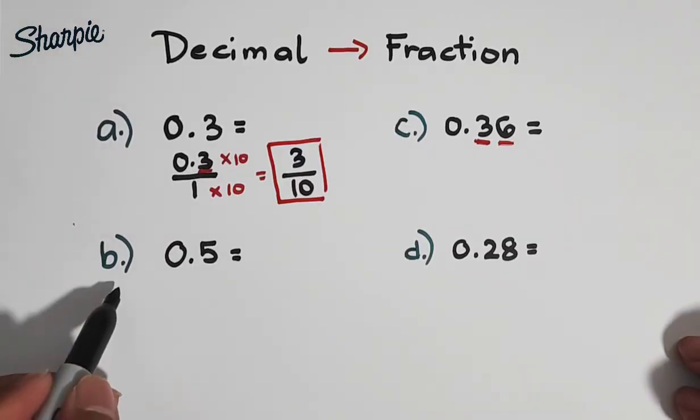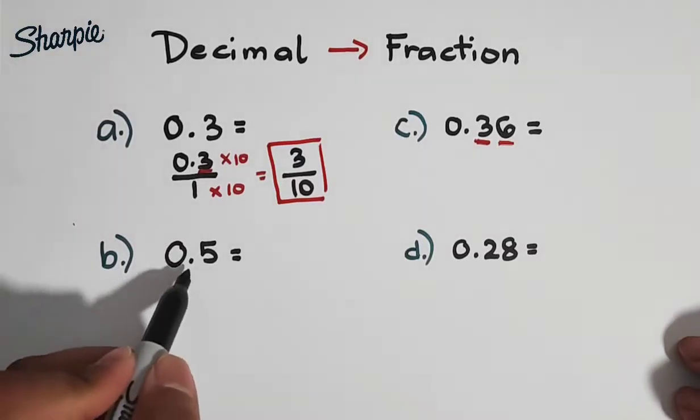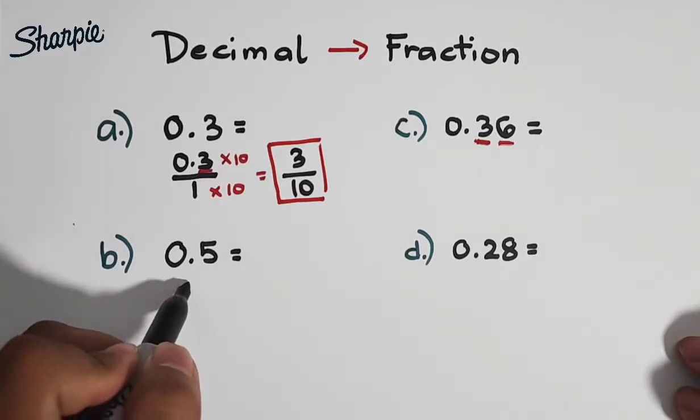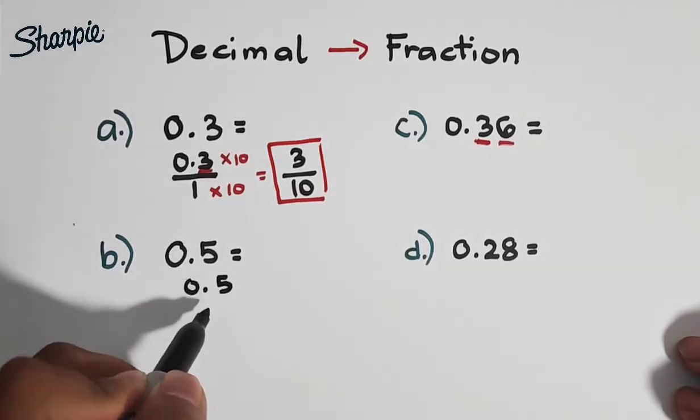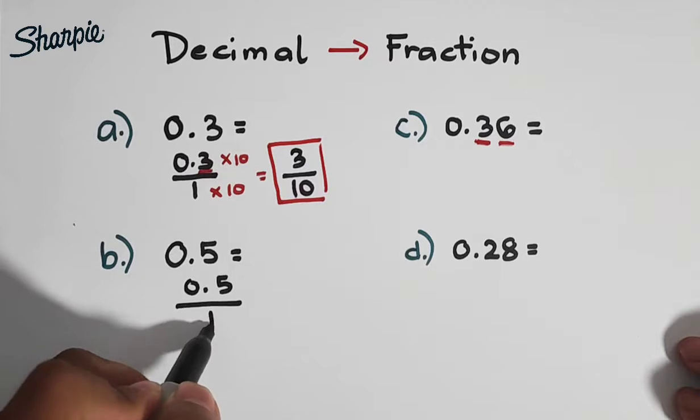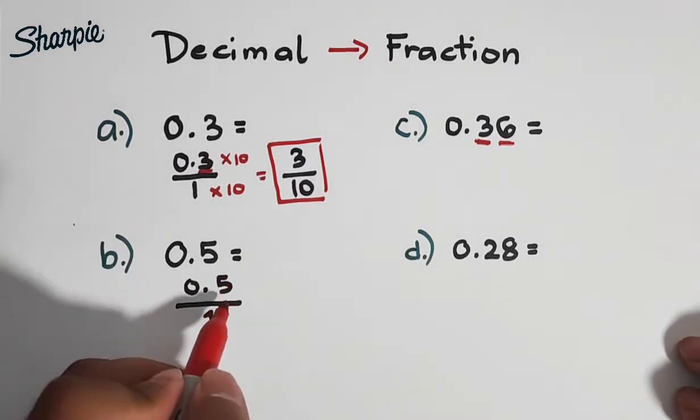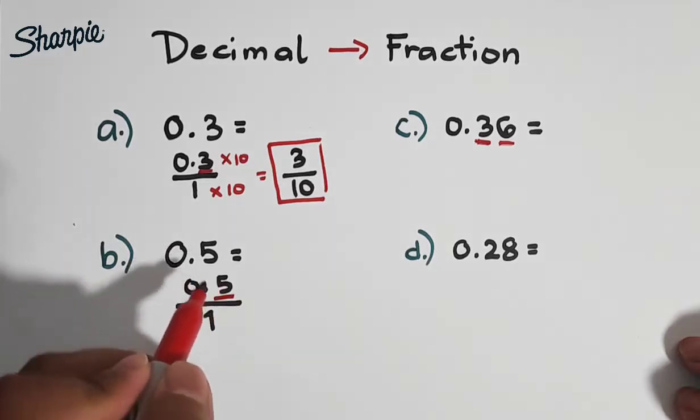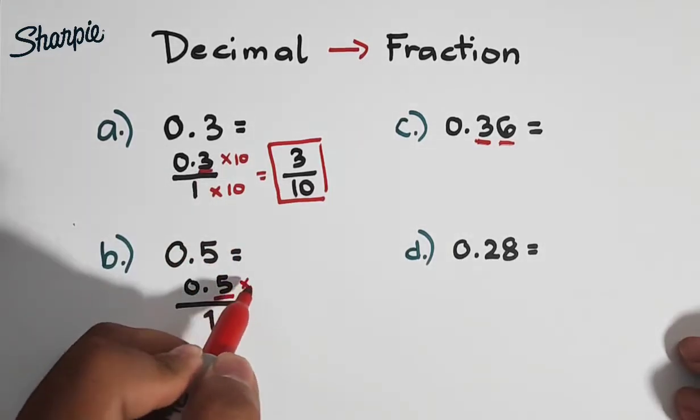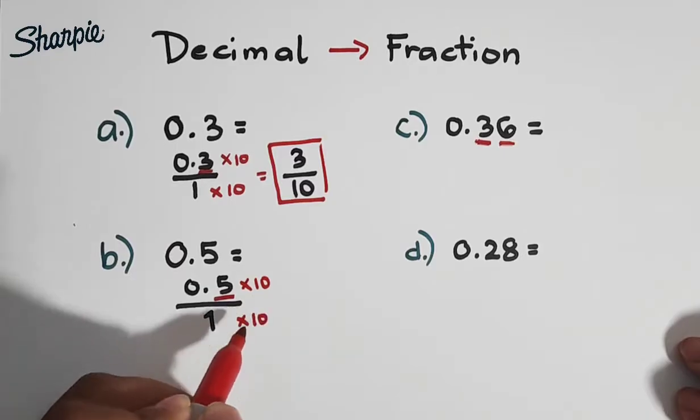Now let's move on with letter B. For letter B, we are given 0.5. So copy natin 0.5 over 1. And as you can see, meron lang tayong 1 decimal value, ito siya. Ibig sabihin niyan, we will multiply the numerator by 10, same with your denominator.